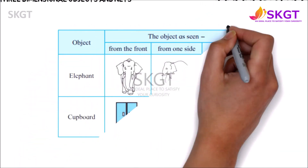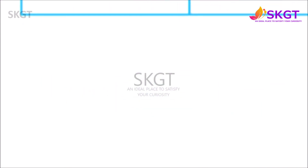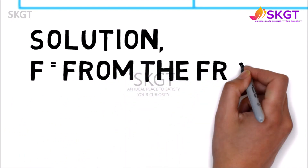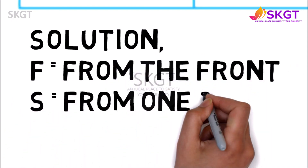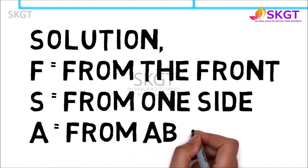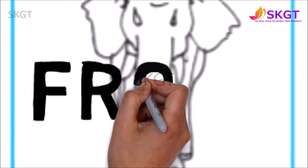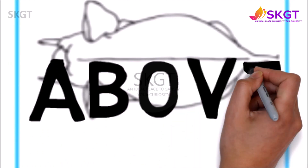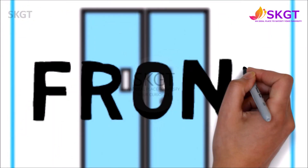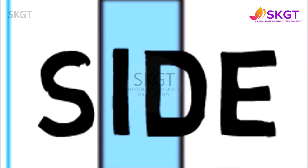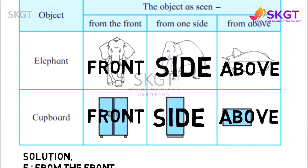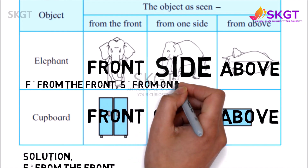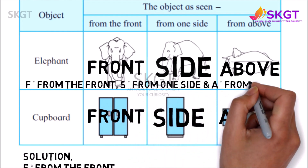Now the object details here — how do we define it? F equals Front, S for Side, and A for Above.